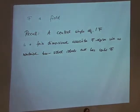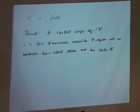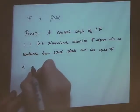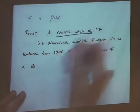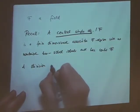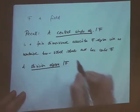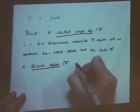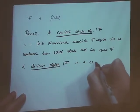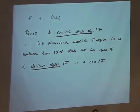The basic example is: take a field and take n by n matrices over that field. A division algebra is a central simple algebra over F in which every non-zero element has a multiplicative inverse.